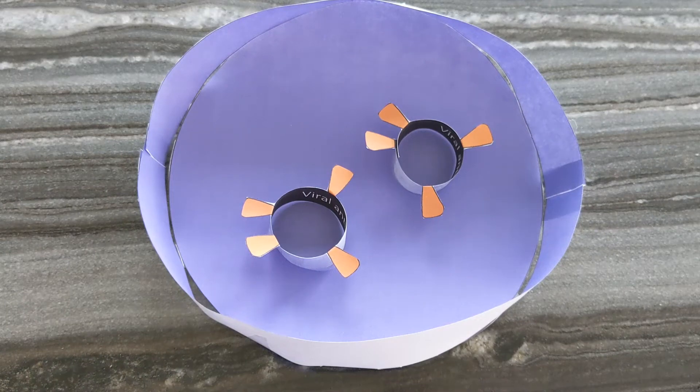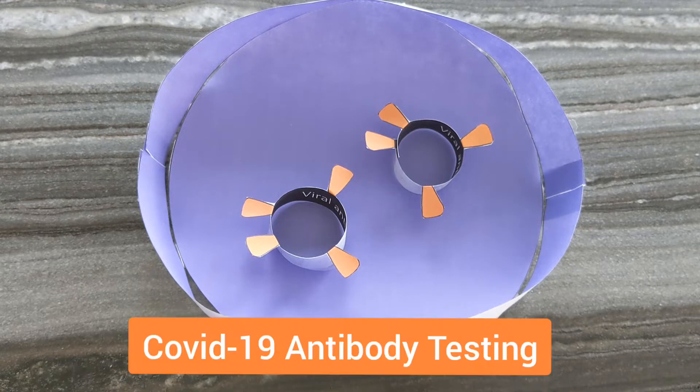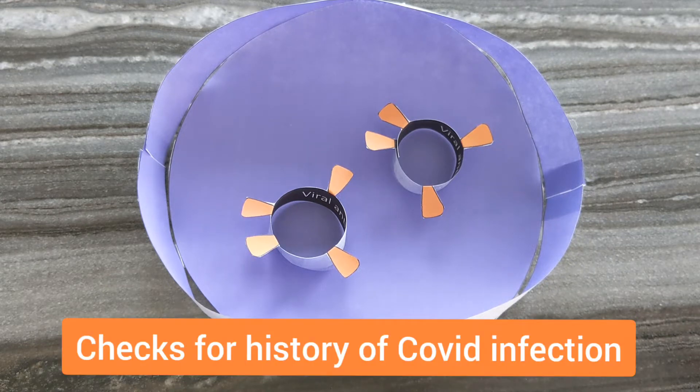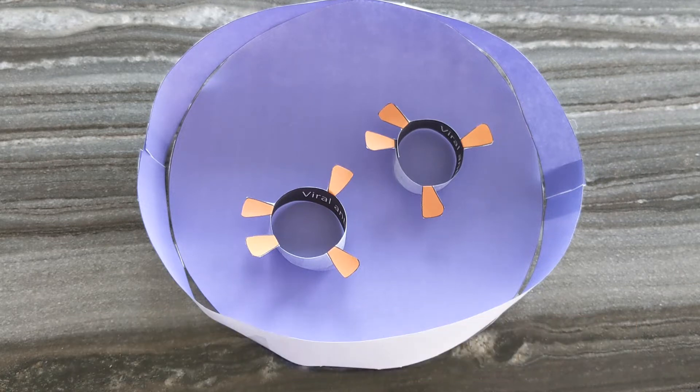We're going to look at what happens during the antibody testing process for COVID-19 antibodies. More and more people are getting COVID-19 antibody testing to see if they've potentially had COVID. I'm using an origami organelles model to show this process. There's a link down below if you would like to access this same model.